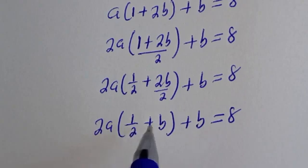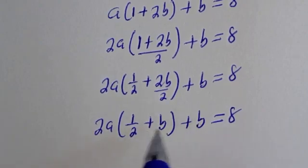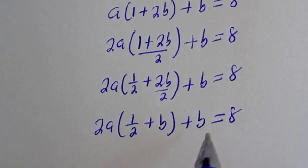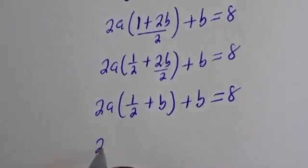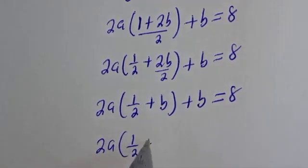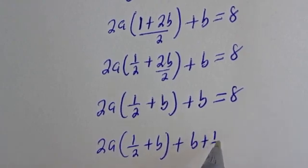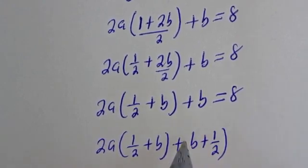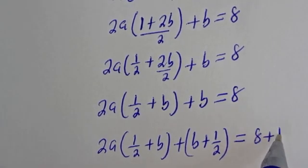Here we have 1 over 2 plus B. So in order to make this 1 over 2 plus B, then we need to add 1 over 2 to both sides. This gives 2A bracket 1 over 2 plus B plus B plus B plus 1 over 2 is equal to 8 plus 1 over 2.